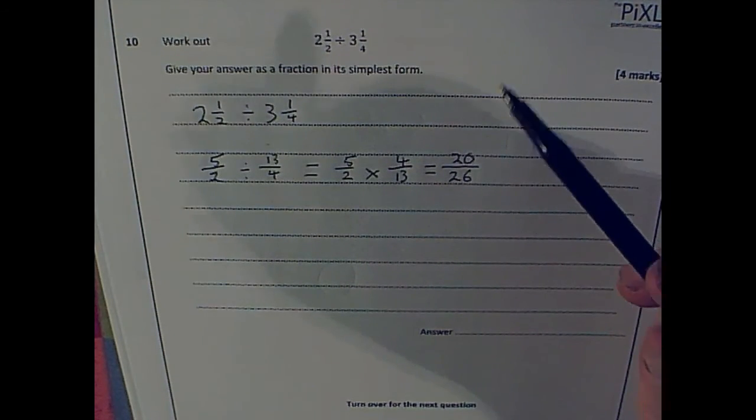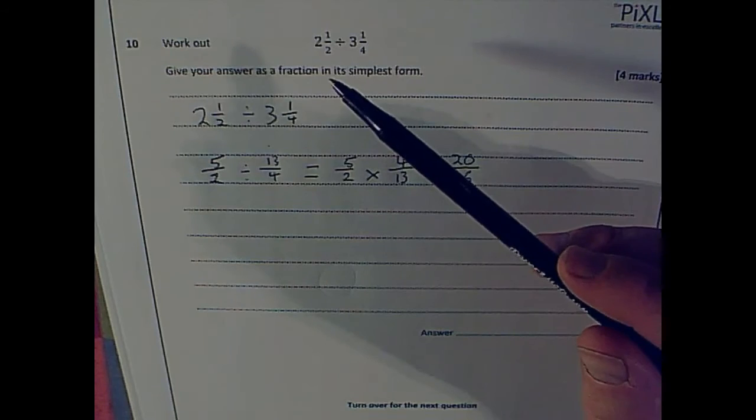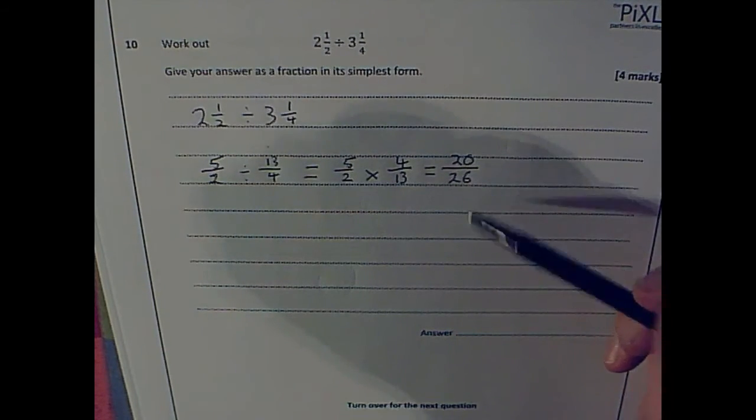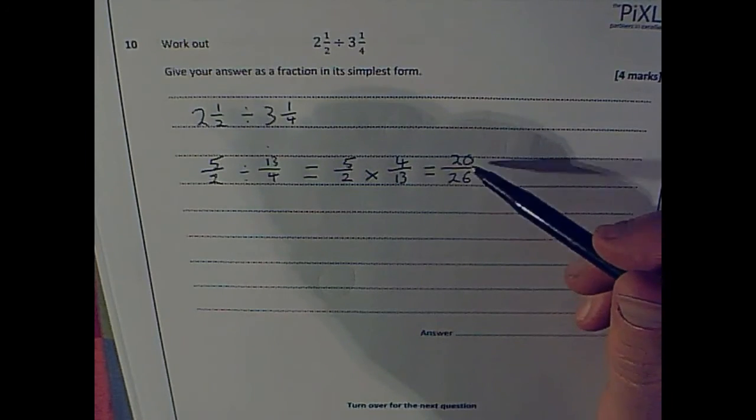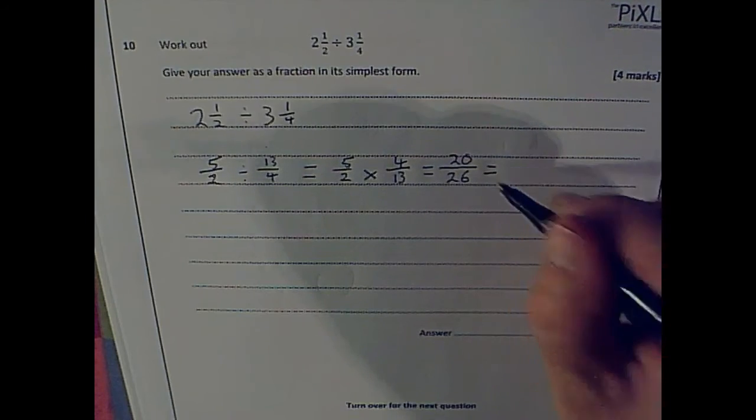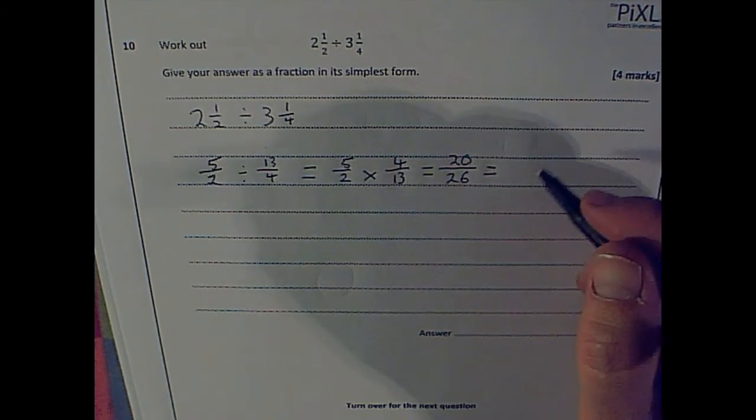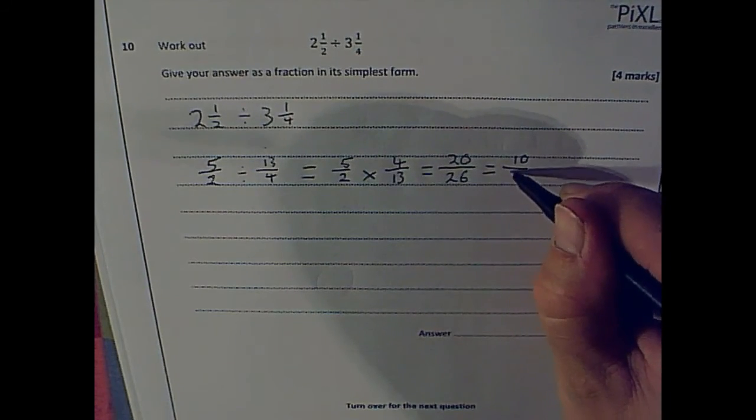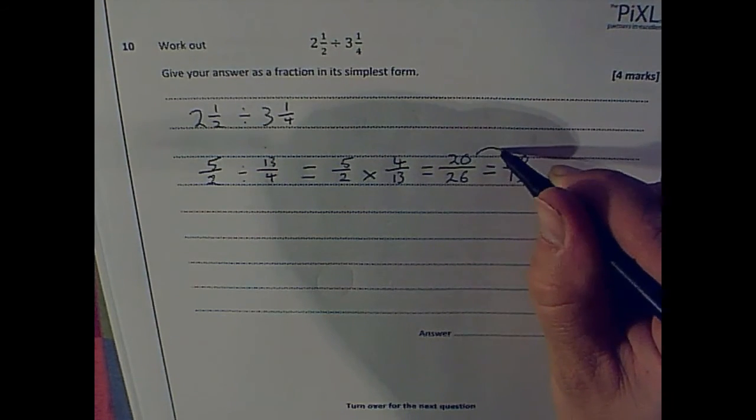20 out of 26. But I can't finish there because it says in its simplest form. And I can simplify this. What goes into both of these? Well, they're both even. So I can see that two goes in. So I'm going to start by dividing them both by two and see where it gets me. That gets me to 10 out of 13. So if I divided them both by two.